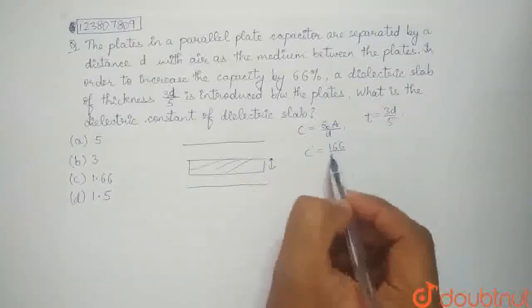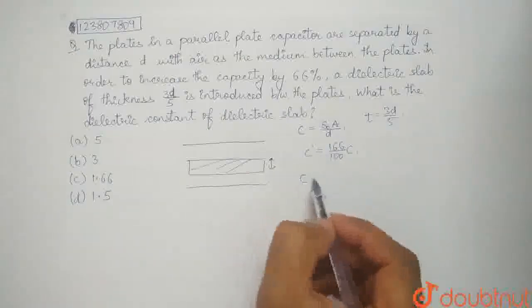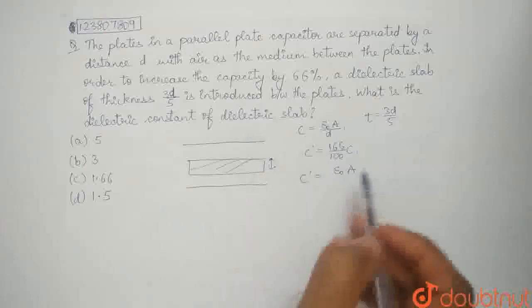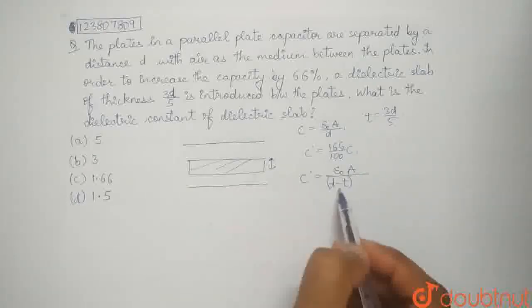So we can say that c dash will be equal to 166 by 100 times c. And if we write the formula of c dash, it's epsilon naught a divided by d minus t plus t by k.